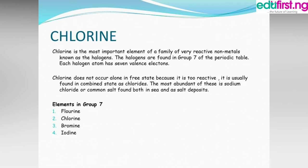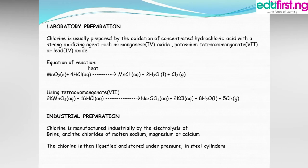Common salt is found both in the sea and as sea deposits. Other elements in group seven of the periodic table include fluorine, chlorine, bromine, and iodine. Now, how can chlorine be prepared in the lab? Chlorine is usually prepared by the oxidation of concentrated hydrochloric acid with a strong oxidizing agent such as manganese dioxide or potassium permanganate (KMnO₄) or lead dioxide.